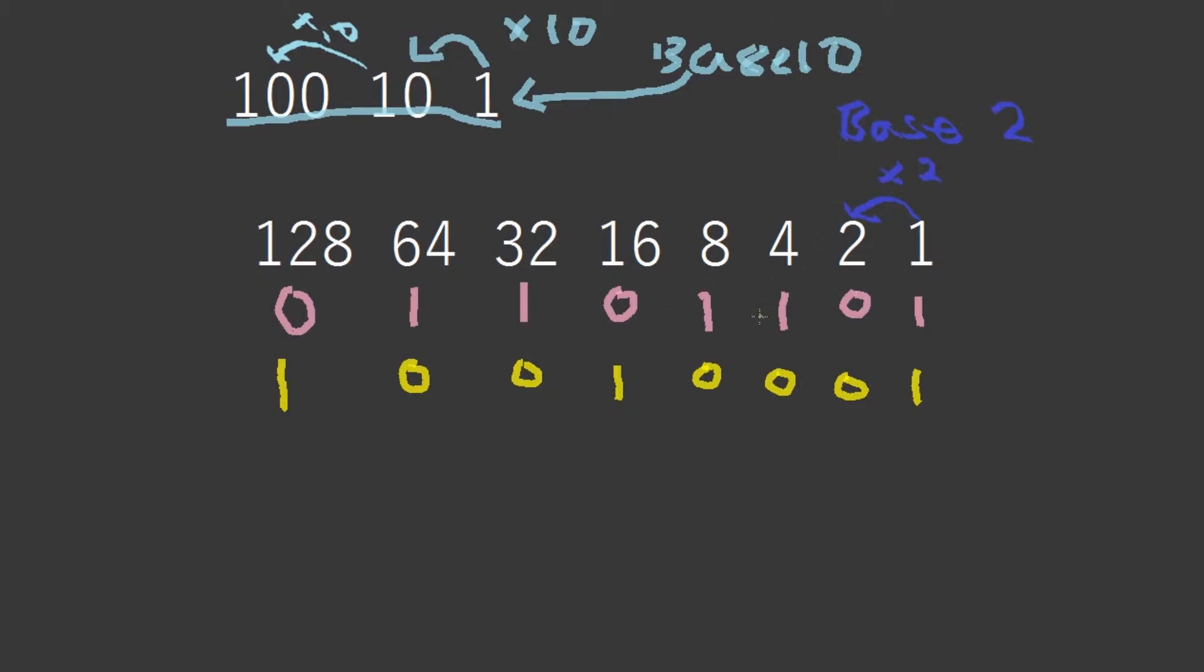So adding binary is actually more simple than adding normal numbers, but it just takes a little bit longer. Now let's start. So 1 plus 1 in binary—1 plus 1 is 2, but in binary it's 1-0.